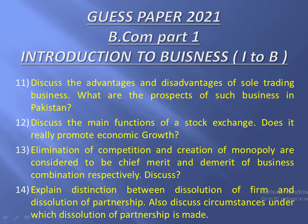इन चार questions में question number eleven — advantages and disadvantages of sole trading — comparatively most important है। इसको बड़े अच्छे तरीके से तैयार कर लीजिए, उम्मीद है इंशाल्लाह यह paper में आएगा। Question number fourteen भी important है — distinction between dissolution of firm and dissolution of partnership। जरूरी नहीं कि question same to same इसी तरह आएंगे, इनमें से कुछ portion भी आ सकता है, लेकिन आपने question की theme को समझना है।